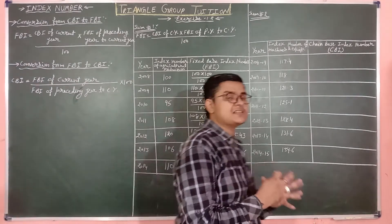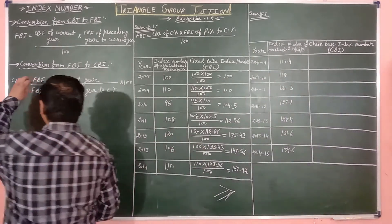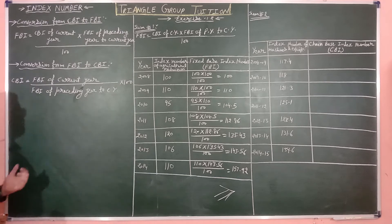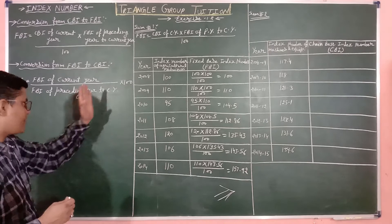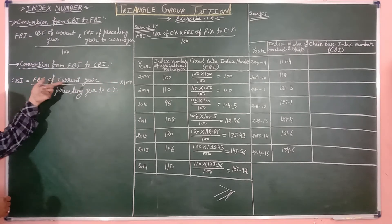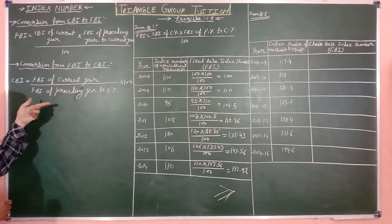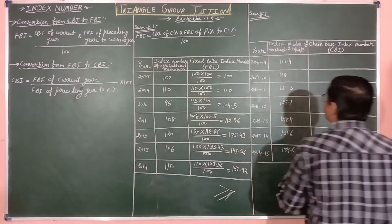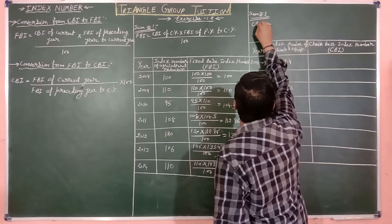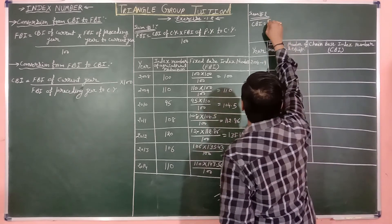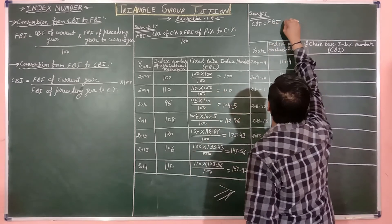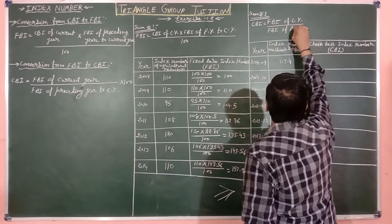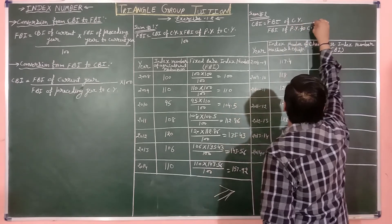This formula is similar to the previous one — here we find the value in current year relative to preceding year and multiply by 100. Here we have the index number of current year divided by index number of preceding year. That is the key difference. So, CBI of current year equals FBI of current year, divided by FBI of preceding year, multiplied by 100.